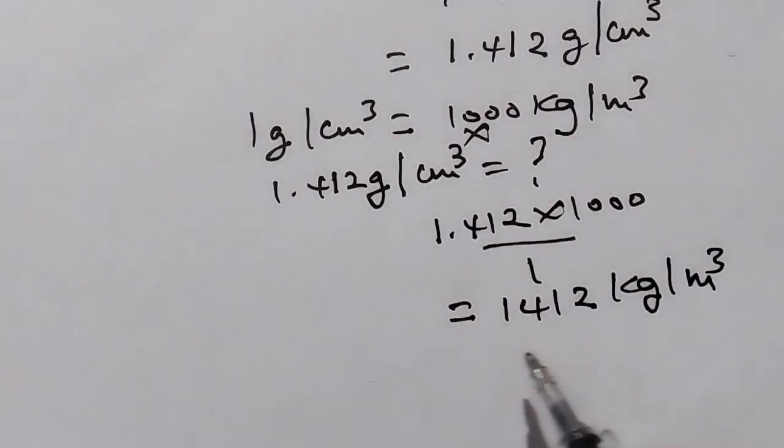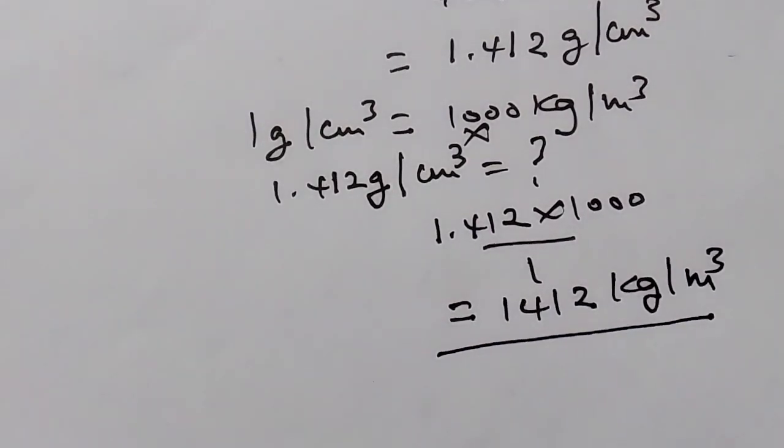So this is our final answer. This is the density. The density in kilograms per meter cubed is 1,412 kilograms per meter cubed.